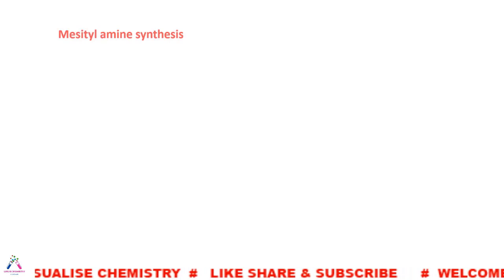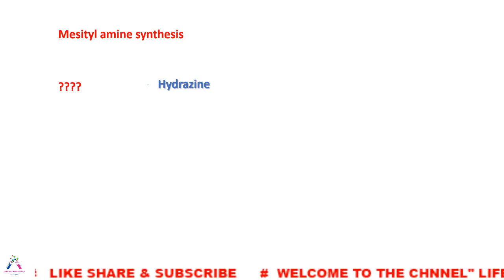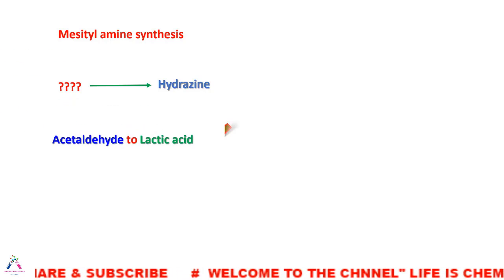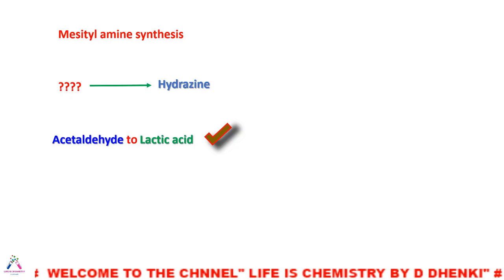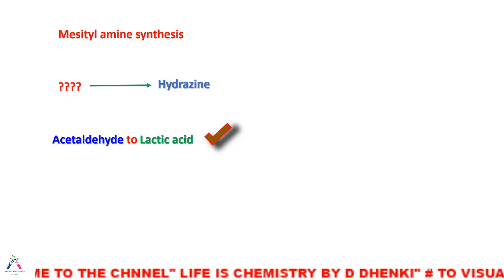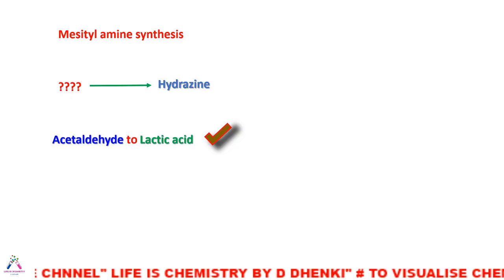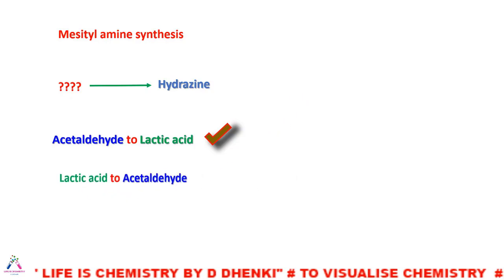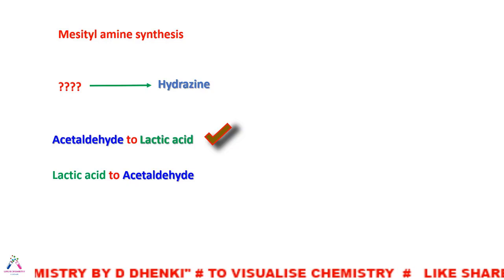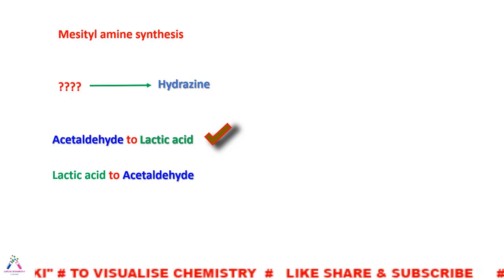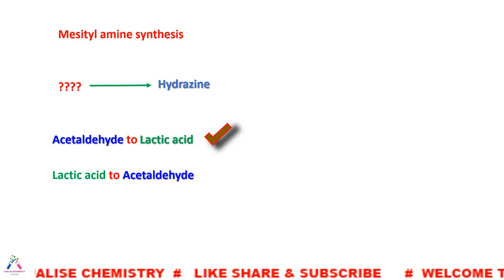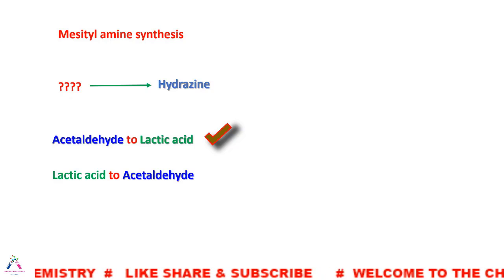Having seen all of this mechanism and theory, can you now synthesize mesityl amine using this reaction? If you want to obtain a specific amine by this reaction, what will be the starting materials? We also know that acetaldehyde can be converted to lactic acid by reaction with HCN followed by hydrolysis. Can this lactic acid be converted back to acetaldehyde by Hofmann degradation? Think about it carefully — you may get a surprising answer. If you face any problem, watch this video again.